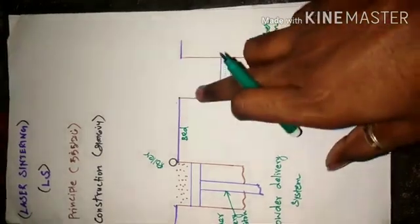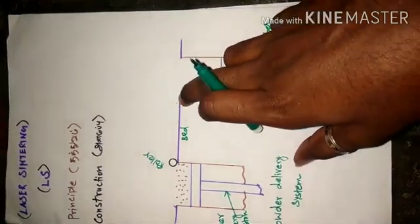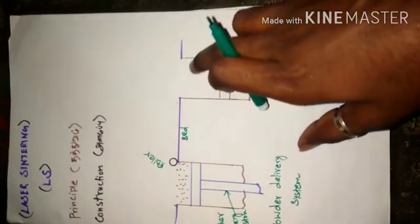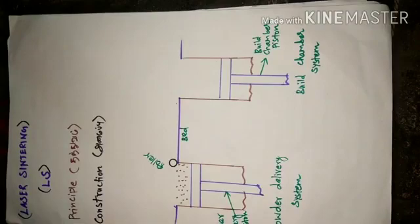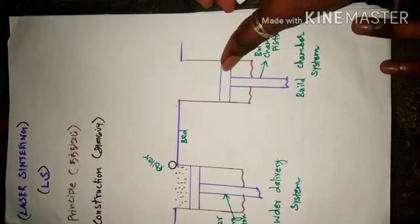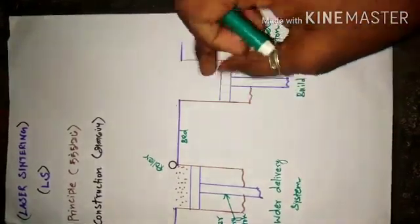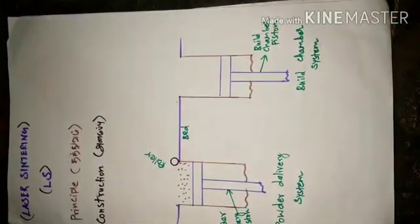If you look at the build chamber piston, this piston is starting with a layer of thickness. First of all, one layer of form on the piston. The other layer of thickness is the same as the other layer — layer by layer of form on the model, the same as the build chamber system.